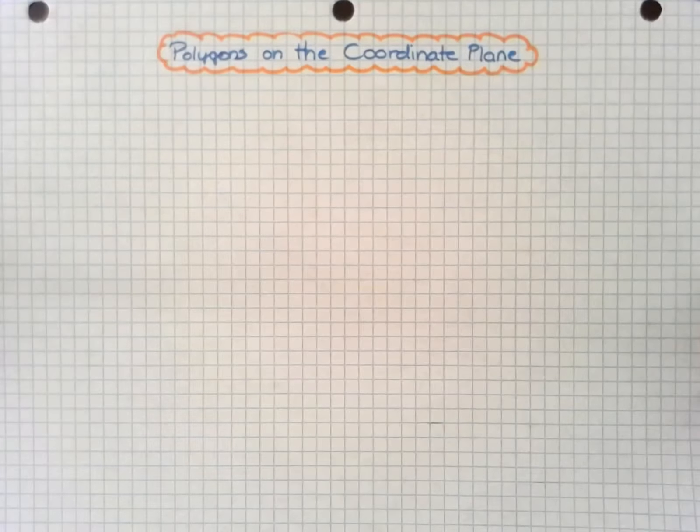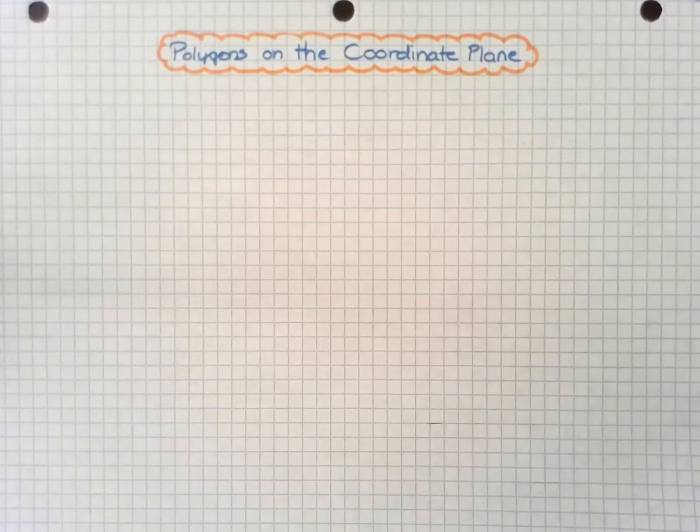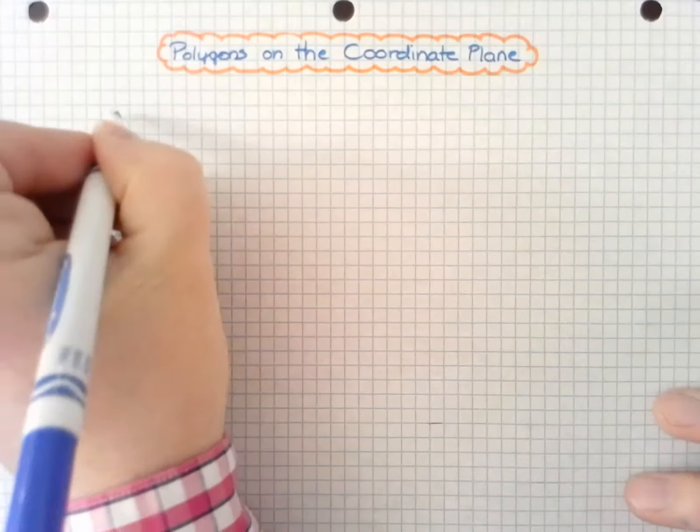Polygons on the coordinate plane. It is really important today to take the time to analyze our coordinate pairs and the relationships with each other and how they show up on the graph and how we can interpret them for perimeter and area.